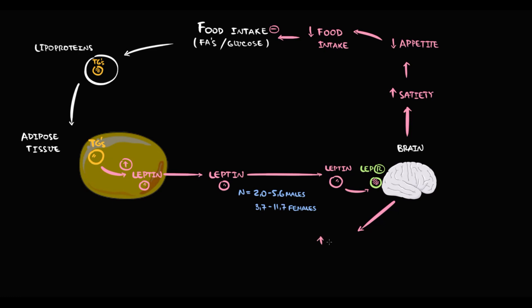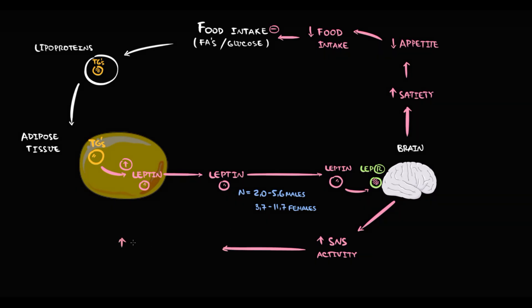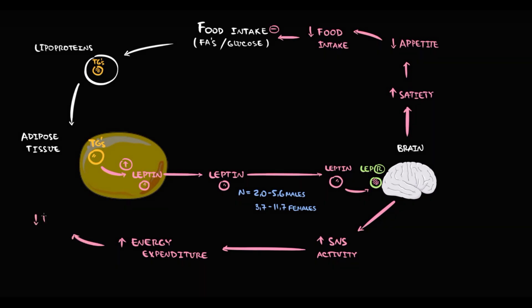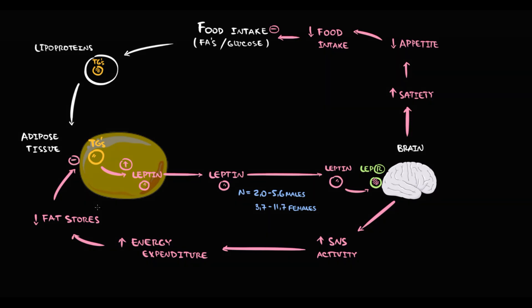In addition to this, activation of the leptin receptor causes increasing sympathetic nervous system activity. With activation of the sympathetic nervous system, energy expenditure increases. And because the major energy reserve are triacylglycerols in adipose tissue, to provide additional energy we have to break down fat stores in adipose tissue. And with loss of triacylglycerols, the total adipose tissue mass decreases. So it is an additional mechanism by which leptin regulates body mass.